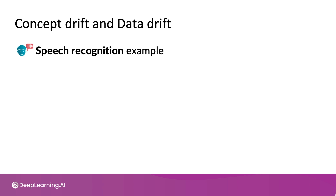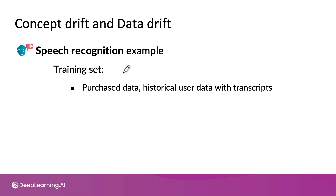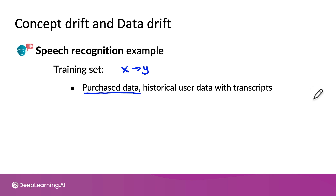Let's walk through a second example using speech recognition. When I built speech systems, quite often I would have some purchased or licensed data, which includes both the input X — the audio — as well as the transcript Y that the speech system is supposed to output. In addition to purchased data, you might also have historical user data of users speaking to your application, together with transcripts of that real user data. Such user data should be collected with very clear user opt-in permission and clear safeguards for user privacy.